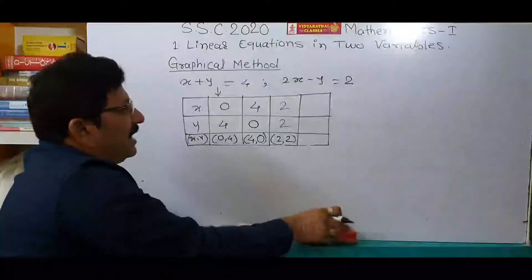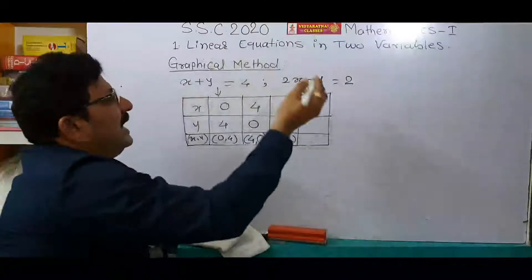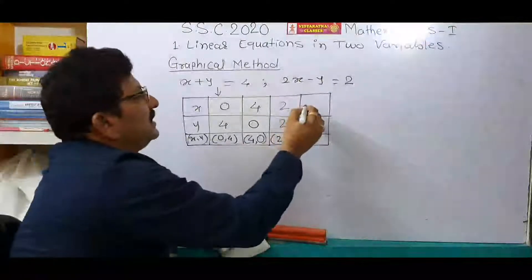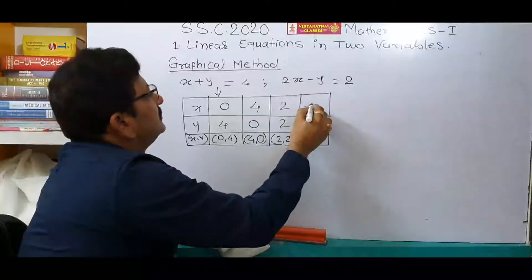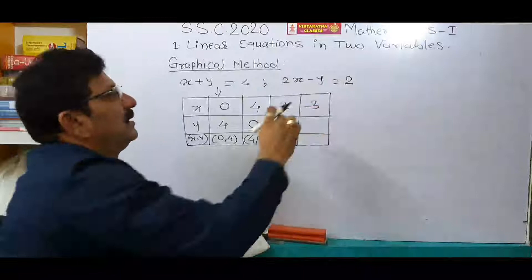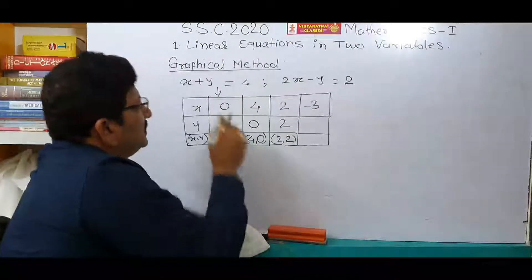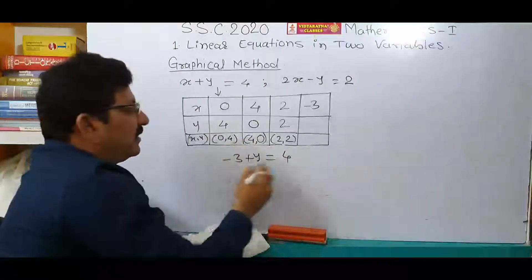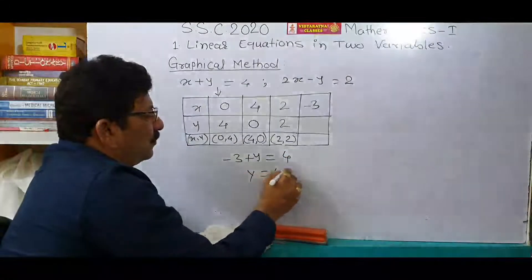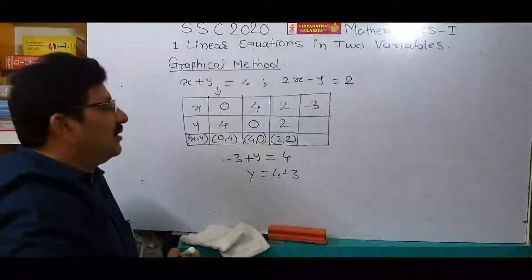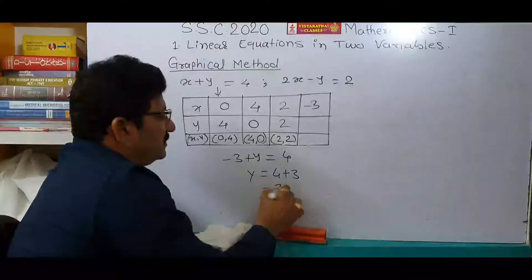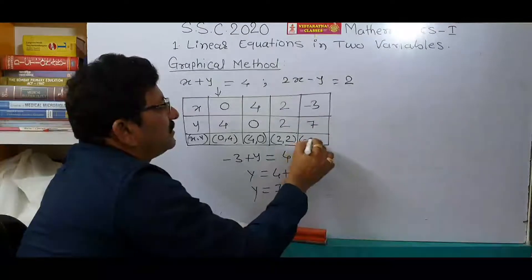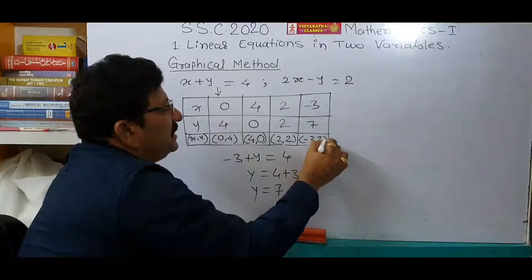For the last, that is the fourth value, consider x is equal to minus 3. Put minus 3 in place of x. After transformation, y is equal to 4 plus 3. And we have got another ordered pair — y is equal to 7. So the ordered pair is (minus 3, 7).